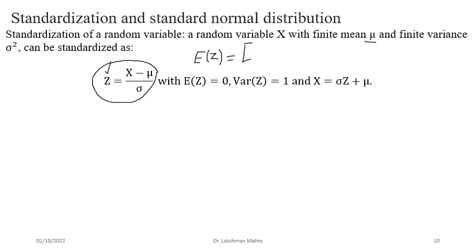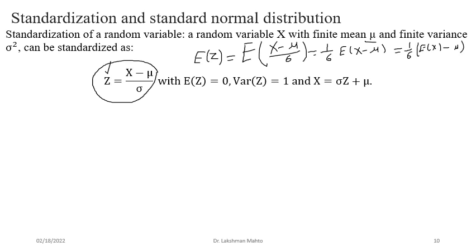In this process we get a new random variable Z. To find its expectation: E[Z] = E[(X-μ)/σ] = (1/σ)·(E[X] - μ) = (1/σ)·(μ - μ) = 0. So the expectation of Z equals zero. Likewise, the variance of Z equals 1. So Z is called a standard random variable, meaning X has been standardized to Z. The inverse relation is X = σZ + μ — multiply Z by the standard deviation and translate by the expectation.